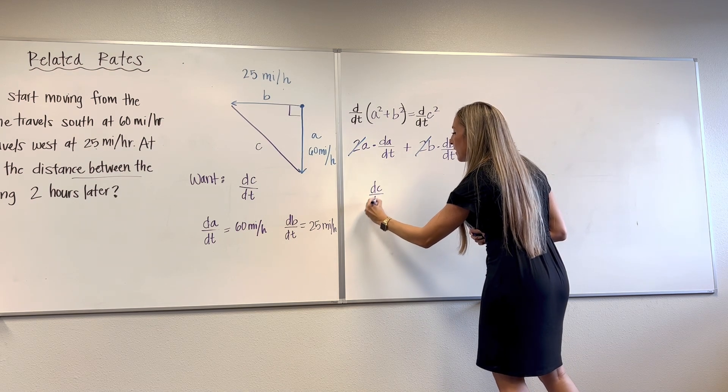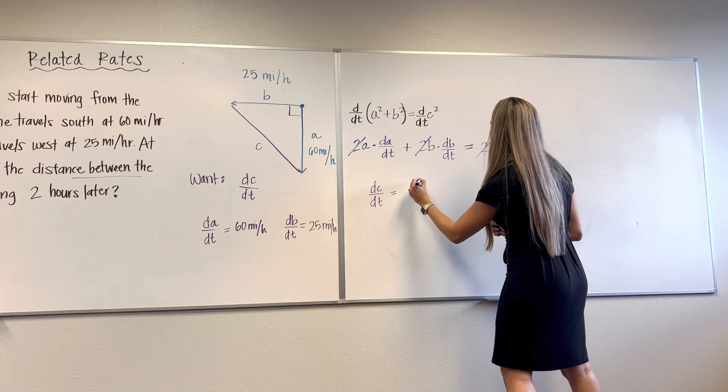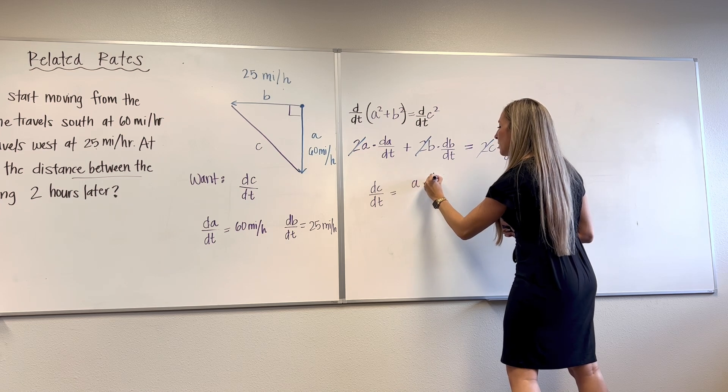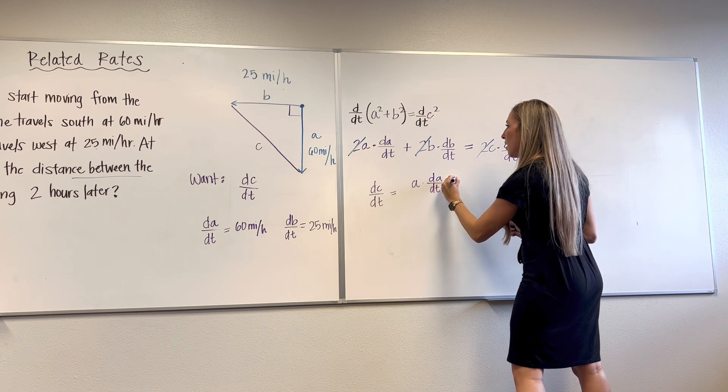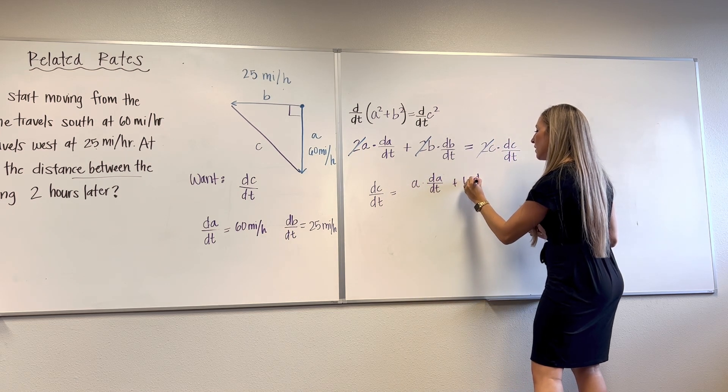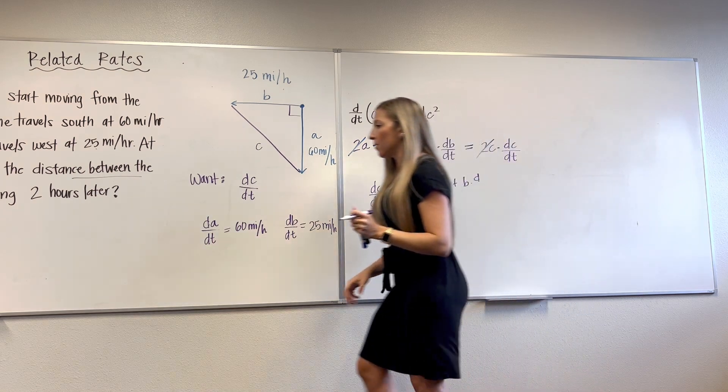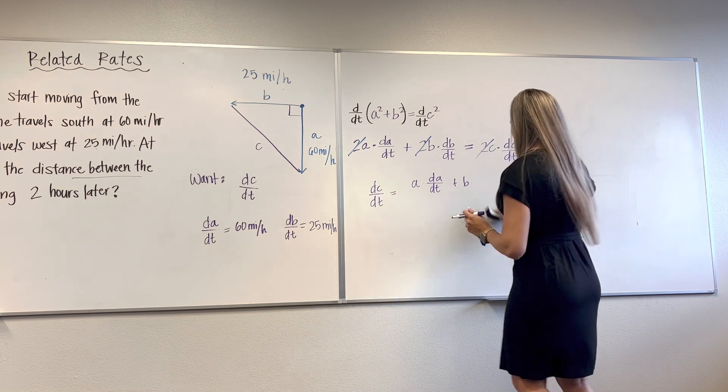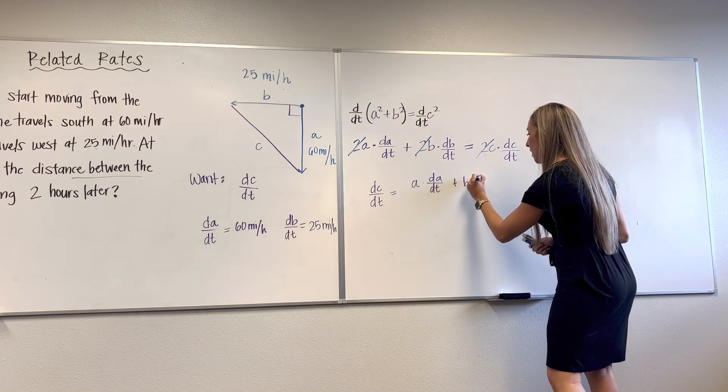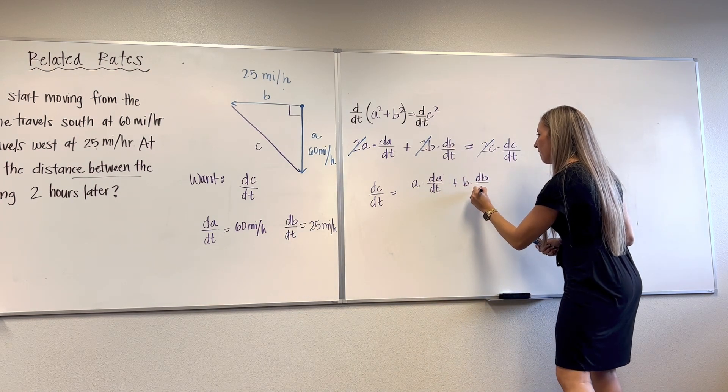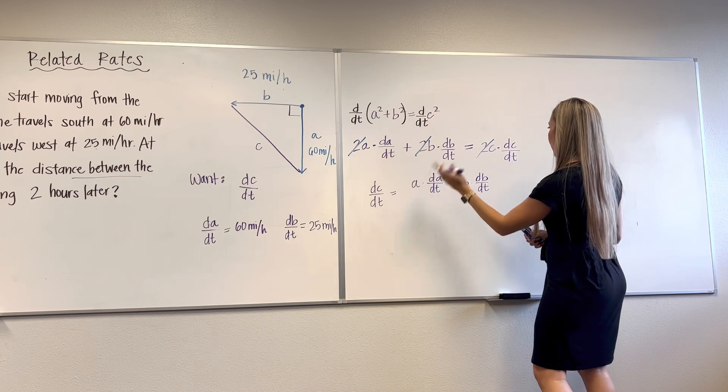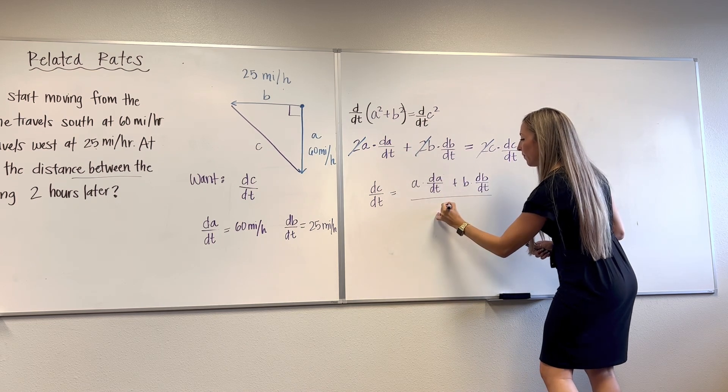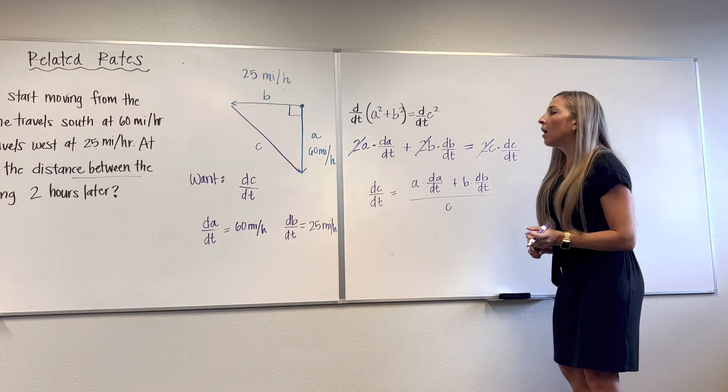dC/dt is equal to A times dA/dt plus B times... Oh, ugly B. Hold on. The B was fine. This one was not. dB/dt. All of that gets divided by C. Good.